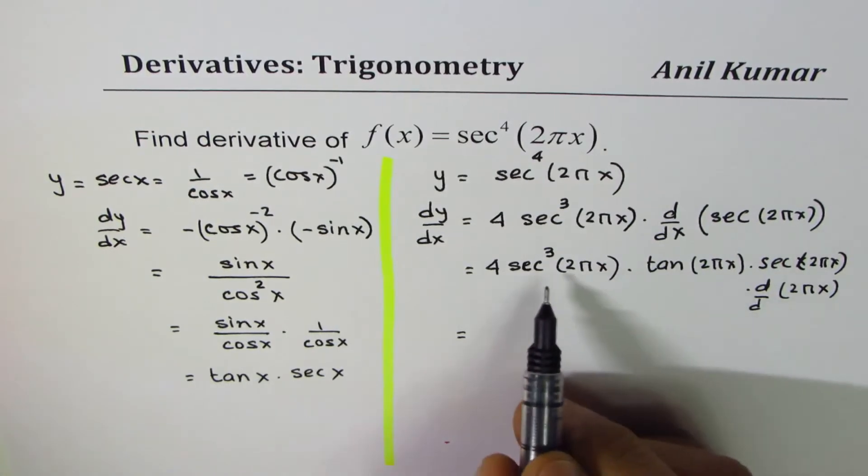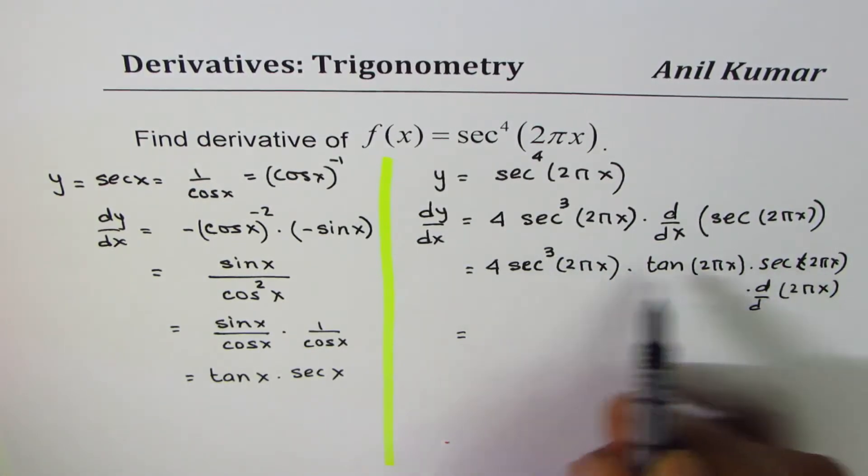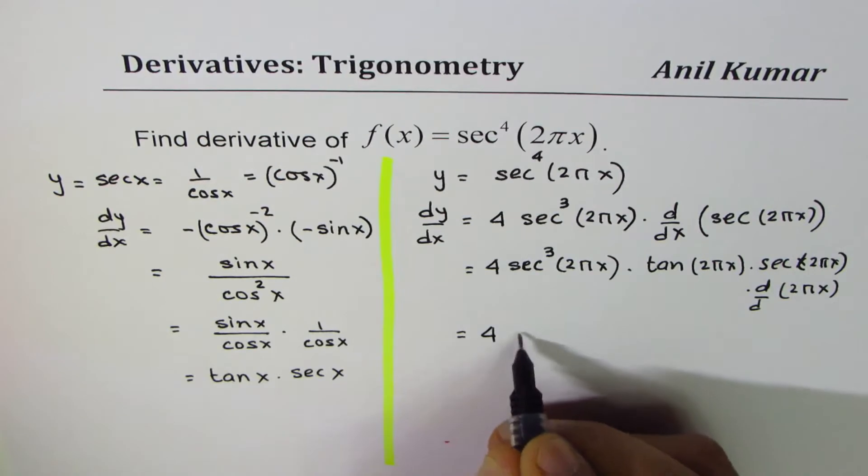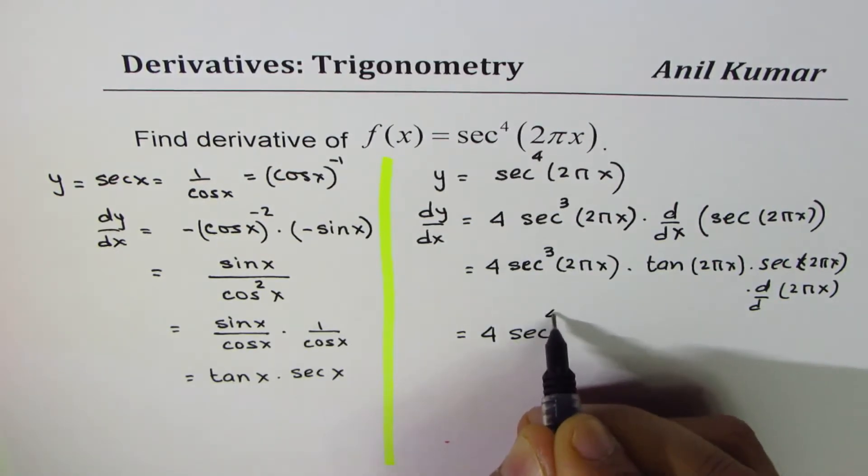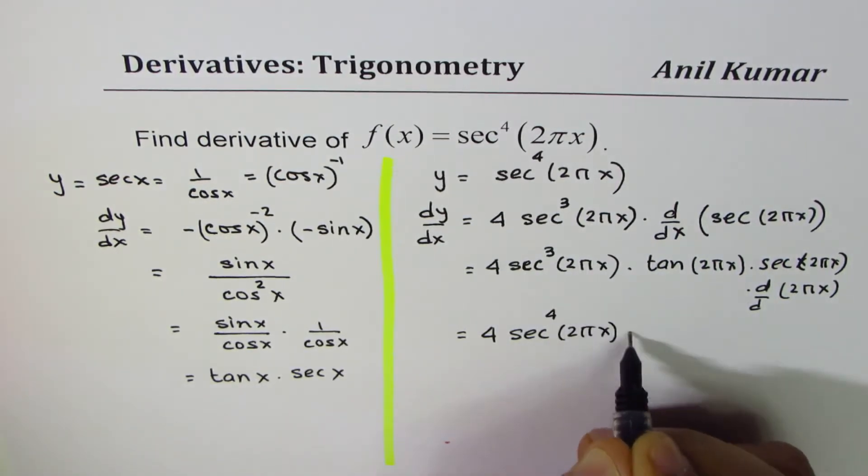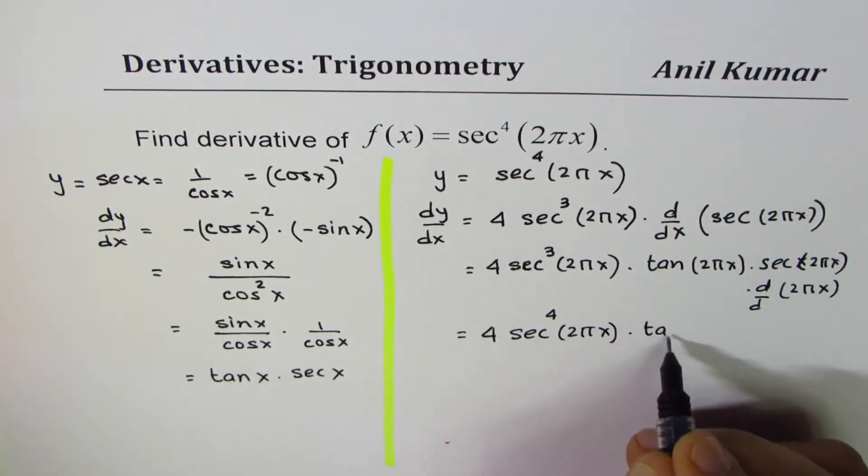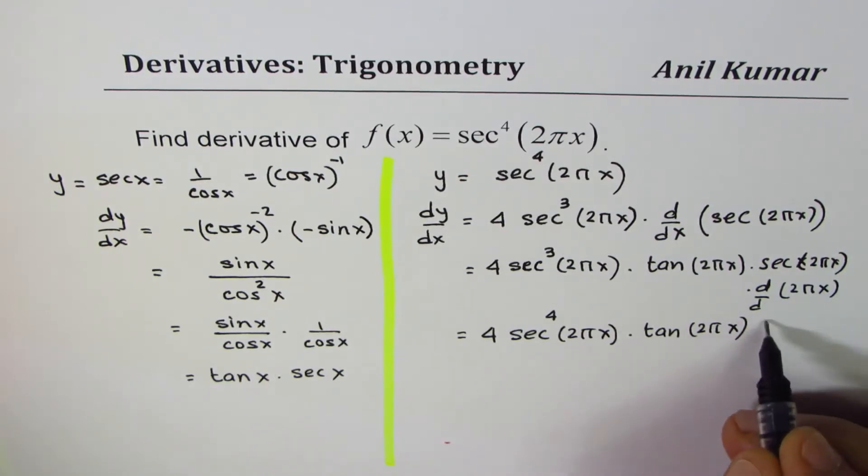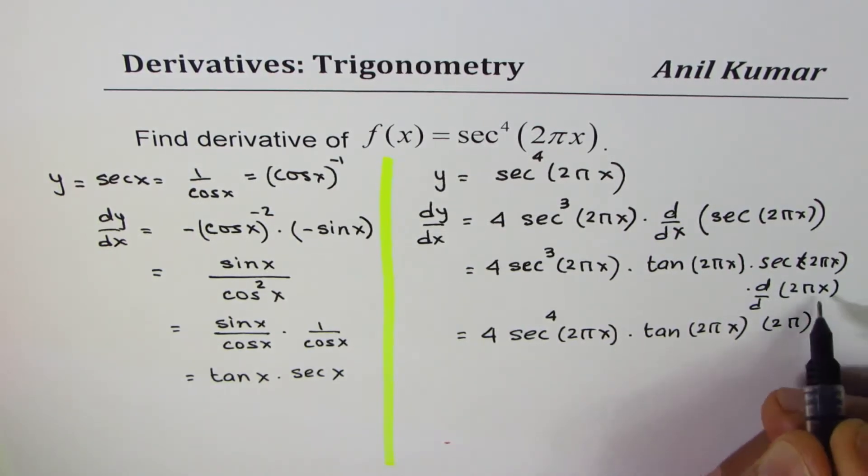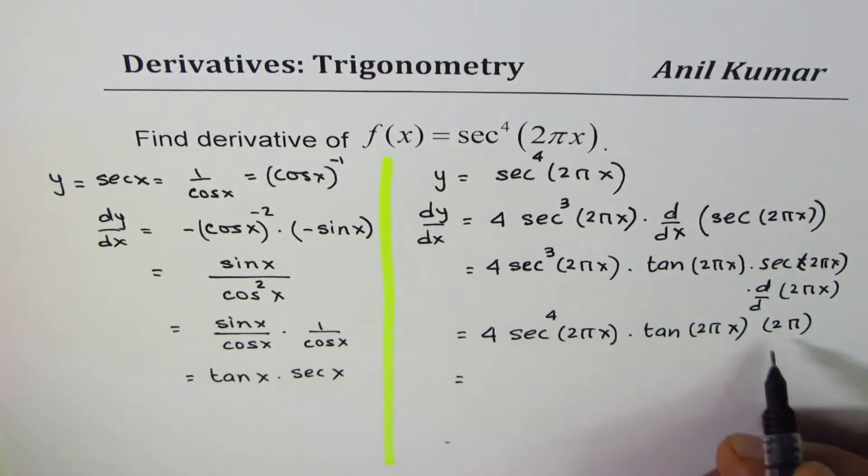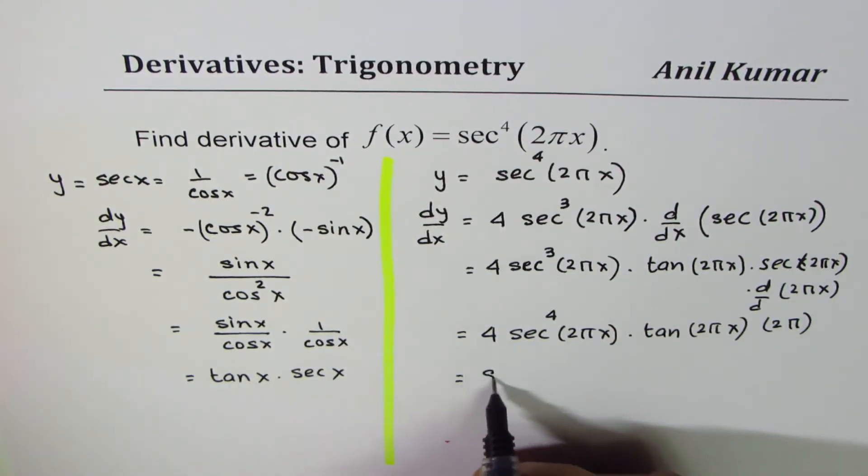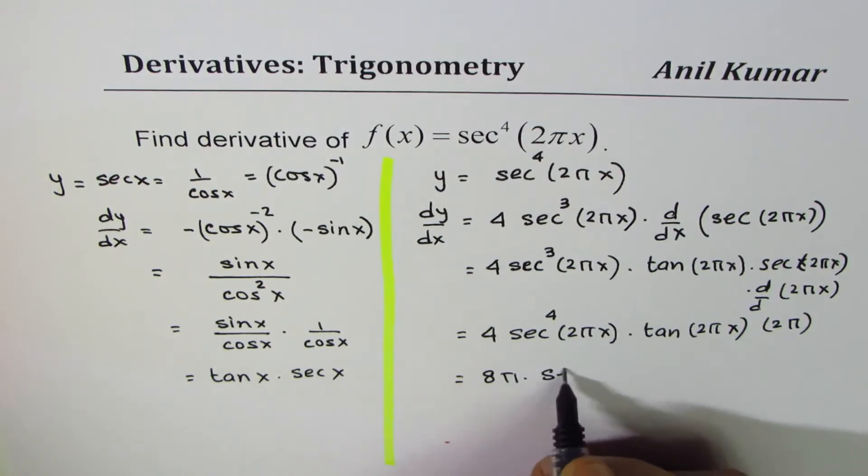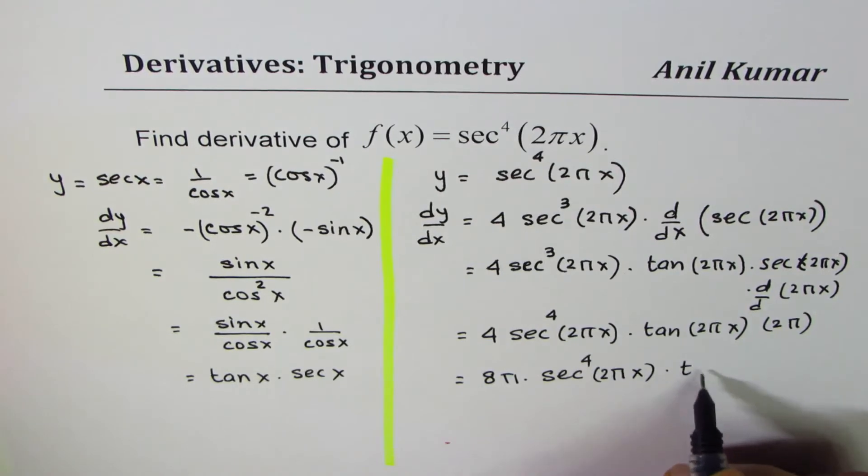Now that gives us secant cube and secant, which gives secant to the power of 4. So we get 4 secant to the power of 4, 2 pi x, times tan 2 pi x, times the derivative of 2 pi x which is 2 pi. So multiplying 2 pi by 4 gives us 8 pi secant to the power of 4, 2 pi x, times tan 2 pi x.